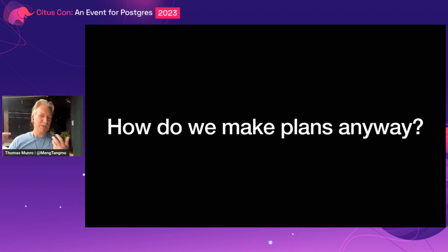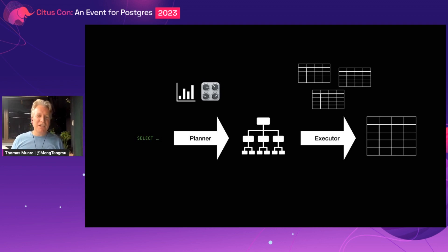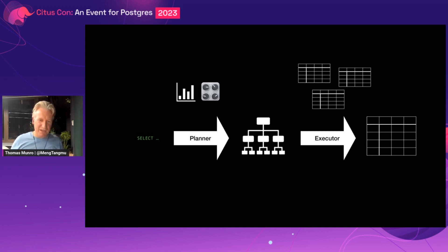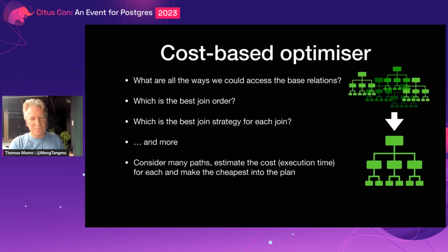Before getting into parallel query plans, let's review how plans are made in general. A relational database — not just Postgres — is a machine you feed queries into. The planner takes an analyzed form of the query plus statistics about the tables referenced and settings that control costs, and magically spits out a plan — a tree of operations. That plan can then be executed, potentially multiple times if it's a prepared statement, running all the steps against the tables to produce results.